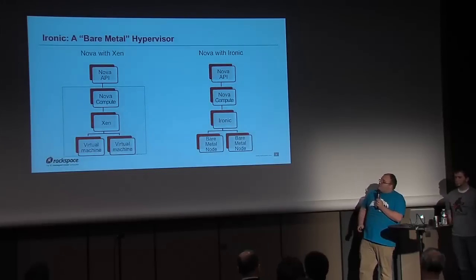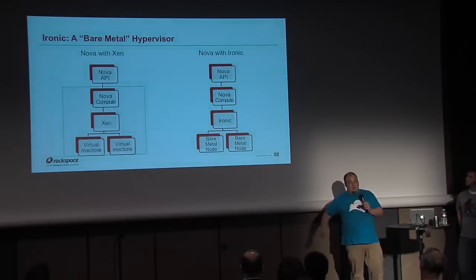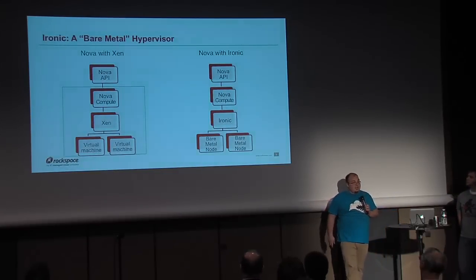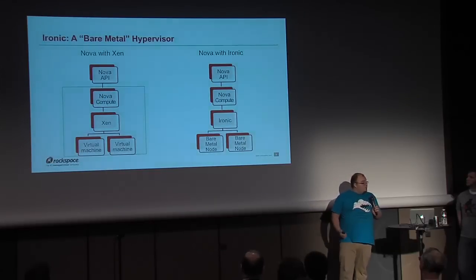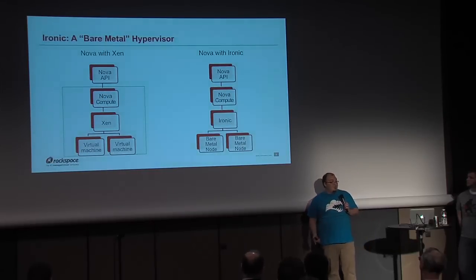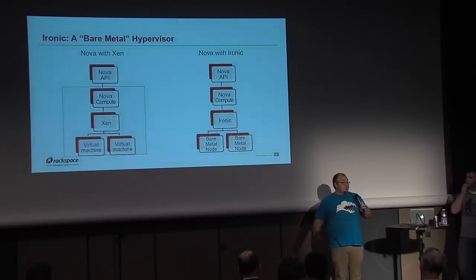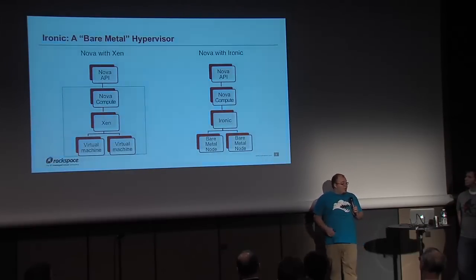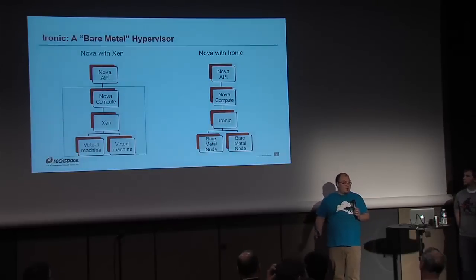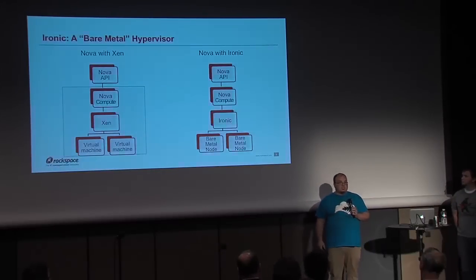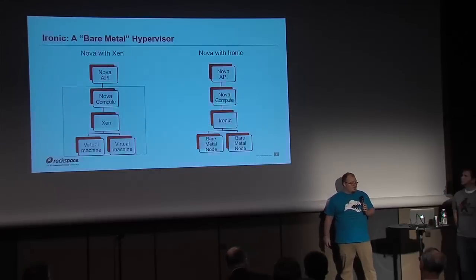One big notable difference is that if you're using a traditional hypervisor, your Nova compute, the hypervisor API you're calling, and your virtual machines are all on the same box. However, with Ironic, you're going to have independent Nova computes, a completely independent Ironic environment, and then completely separate bare-metal nodes to deploy to. So there's a little bit more orchestration involved.